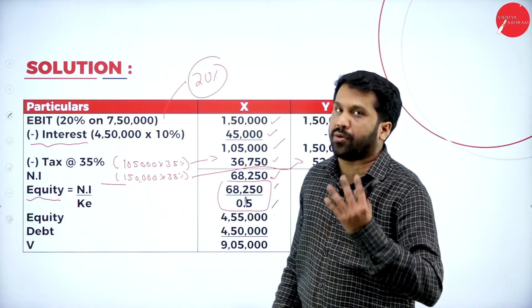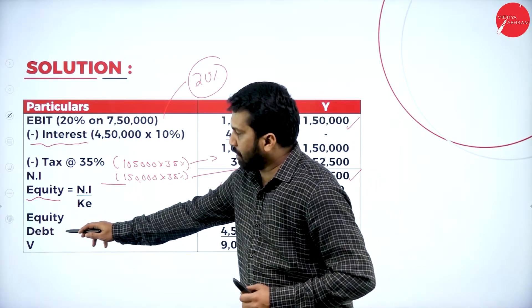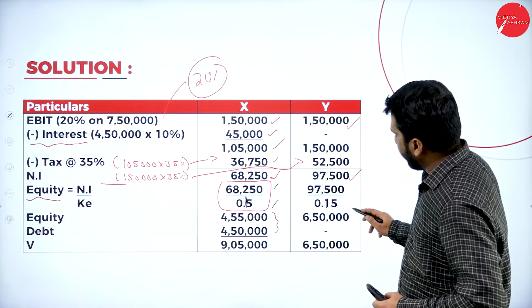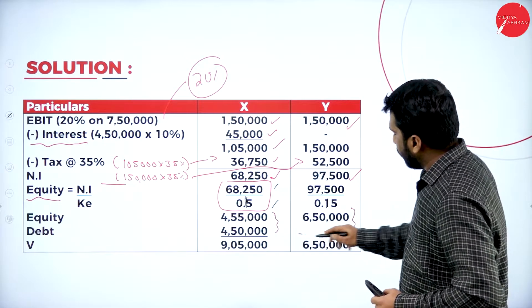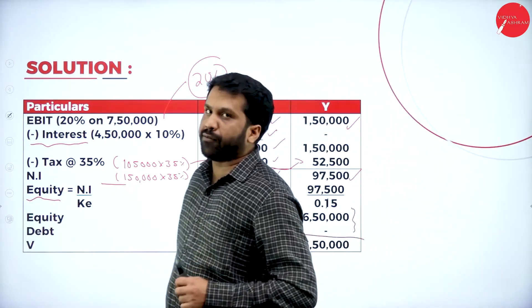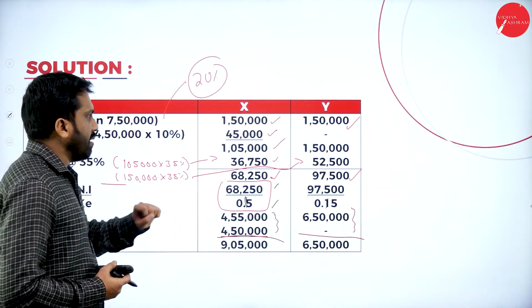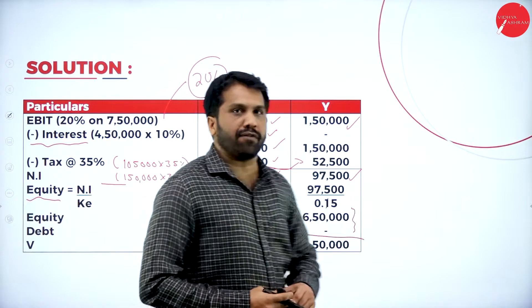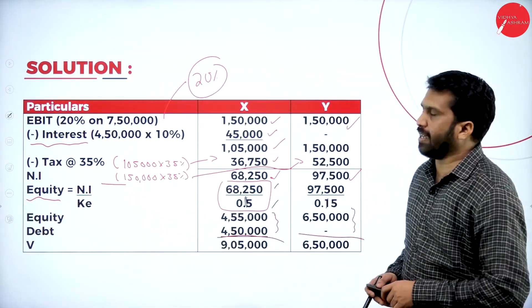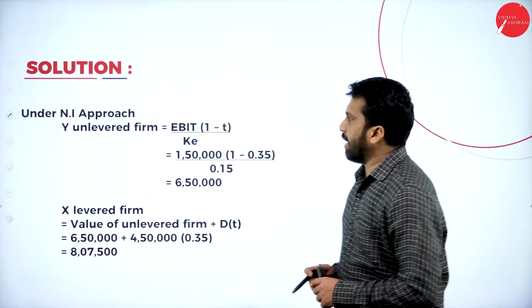To find the value of the firm under NI approach, we add debentures to the equity value. For X: 4,55,000 + 4,50,000 = 9,05,000. For Y, there are no debentures, so: 97,500 ÷ 0.15 = 6,50,000. Value of X = 9,05,000 and value of Y = 6,50,000.